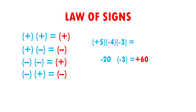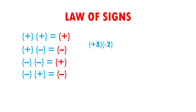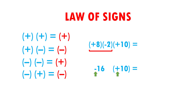Very easy, right? Let's see another example. I have plus eight times minus two times plus ten. First, I am going to multiply plus eight times minus two. Positive times negative gives me negative, and eight times two gives me 16, so minus 16. The plus 10 I lower it exactly the same. Now I am going to multiply minus 16 times plus 10. Negative times positive gives me negative, and 16 times 10 gives me 160. Therefore, my result is minus 160.